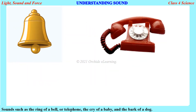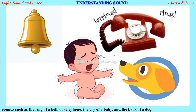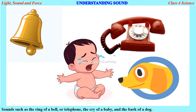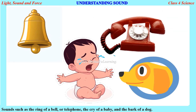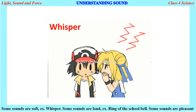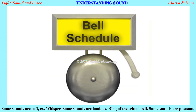We hear various kinds of sounds such as the ring of a bell or telephone, the cry of a baby, and the bark of a dog. Some sounds are soft — for example, a whisper. Some sounds are loud — for example, the ring of the school bell. Some sounds are pleasant — for example, music.